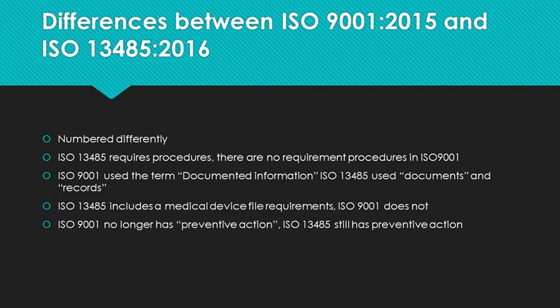There are some differences between ISO 9001 and ISO 13485. When the 2015 edition of ISO 9001 came out, the numbering of sections between the two standards differed because ISO 9001 now follows Annex SL. ISO 9001 now no longer requires specific procedures. However, ISO 13485 does require the use of procedures. ISO 9001 added the term 'documented information' to address both procedures and records, whereas ISO 13485 still utilizes the terms procedures and records.